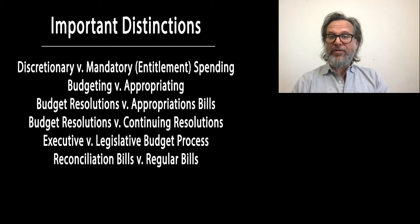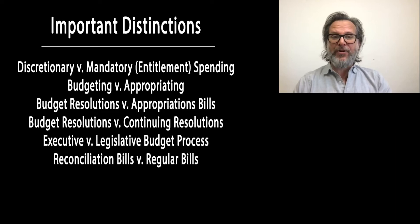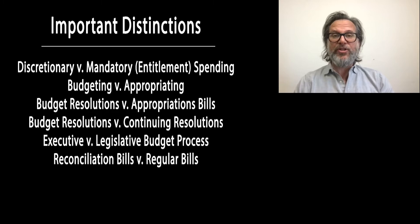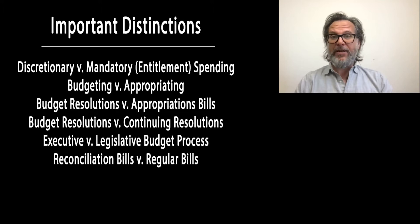That's not true for discretionary spending, which is actually the opposite. Discretionary spending won't happen unless a new appropriations bill is passed and signed into law by the president every year. Congress could do appropriation bills for two years or five years — except for funding the Army, which requires a two-year limit. But discretionary spending has traditionally been done on an annual basis. Mandatory spending is permanent and ongoing.